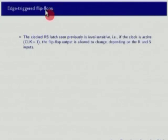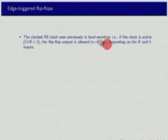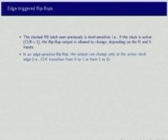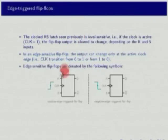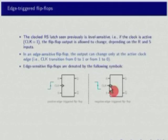Edge triggered flip-flops: this is the difference between flip-flops and latches. The clocked RS latch seen previously is level sensitive - when the clock is active, the flip-flop output is allowed to change depending on R and S inputs. In an edge triggered flip-flop, the output can change only at the active edge of the clock. The active edge depends on what kind of flip-flop it is. There are flip-flops triggered by positive edges and flip-flops triggered by negative edges. An edge triggered RS flip-flop is denoted by a small triangle; a circle outside the triangle means it is negative edge triggered.